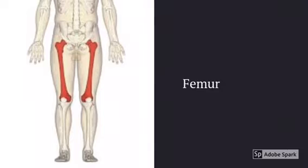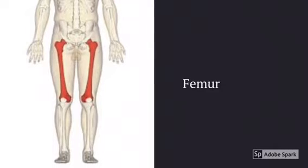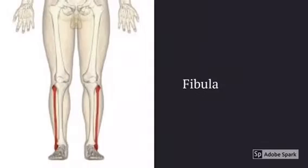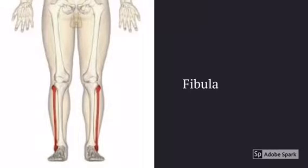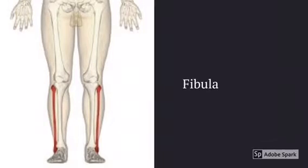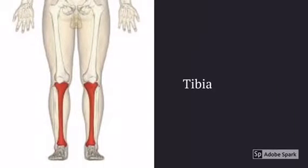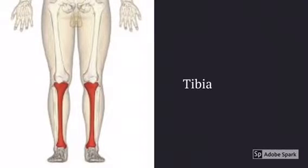This bone is the femur, otherwise known as the thigh bone. This bone is the fibula, the smaller of the two bones in the lower leg — I always think about it like I told a little fib. This bone is the tibia, aka your shin bone.